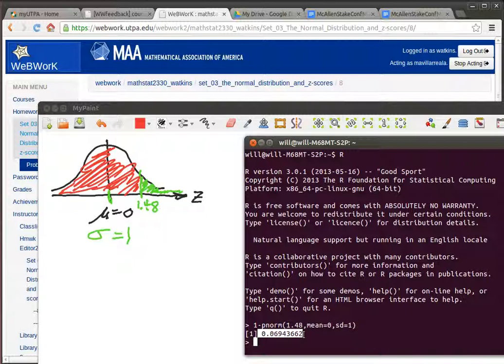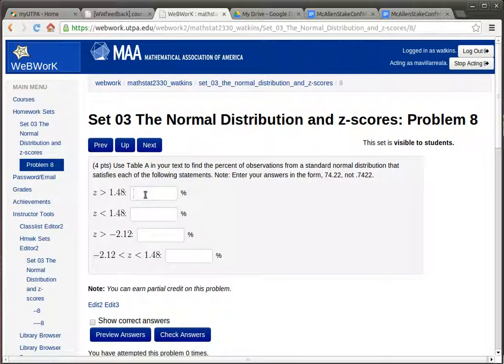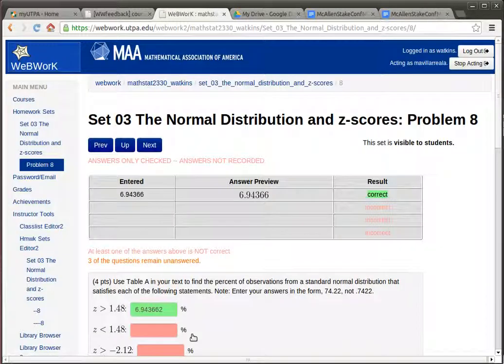So let me just come in here and copy that. Now notice that they wanted us to write this as a percent. So to change a fraction to a percent, I need to move the decimal place 2 to the right. So it's going to be 6.48%. Let's check the answer. Of course it's correct.